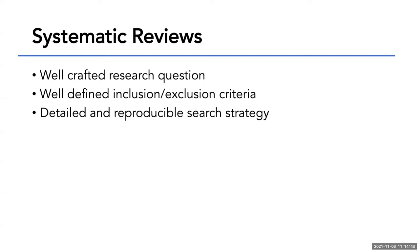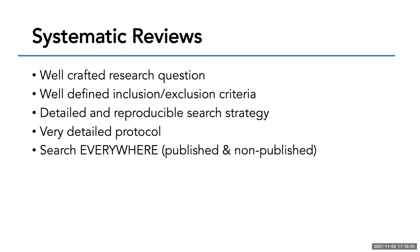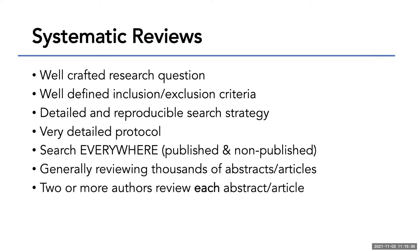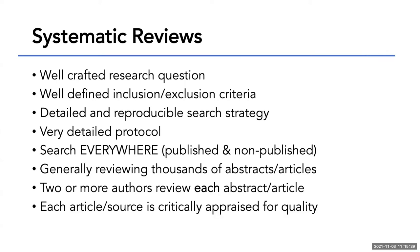You need a very detailed protocol telling people how you're searching, where you're searching, and why you're doing this study. One of the big differences from systematic reviews to narrative reviews is that you search everywhere — both published and non-published data. You're searching not just PubMed but also unpublished clinical trial data, conference proceedings — this is called gray literature — because you're looking for the whole body of literature. You're generally reviewing thousands and thousands of abstracts and articles, there tends to need to be two or more authors to review each abstract or article, and each source needs to be critically appraised for quality, looking for all levels of bias.